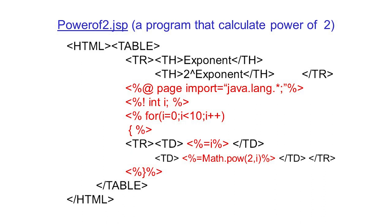The program starts with HTML and then table. The title of the program is 'Program that calculates power of two.' You can see the output: this is power of two — zero to the power two, one to the power two, two to the power two, three to the power two — meaning we are processing the square of natural numbers zero to nine. Also we show two to the power exponent: two to the power zero, one, two, three, four, and so on.